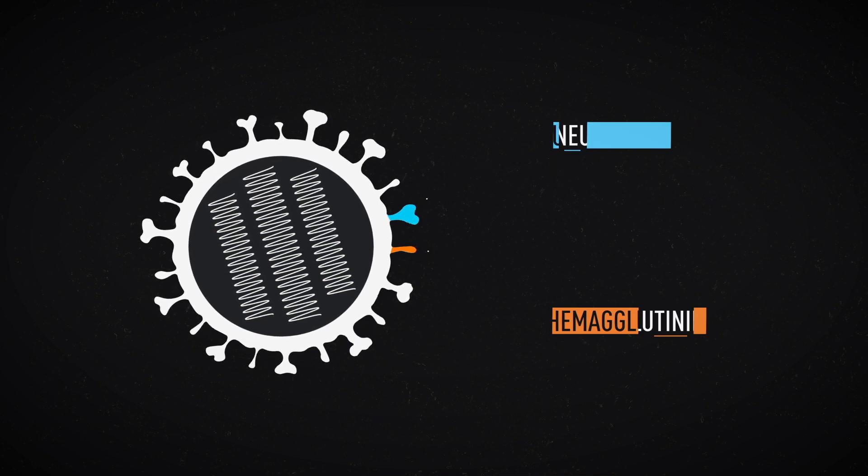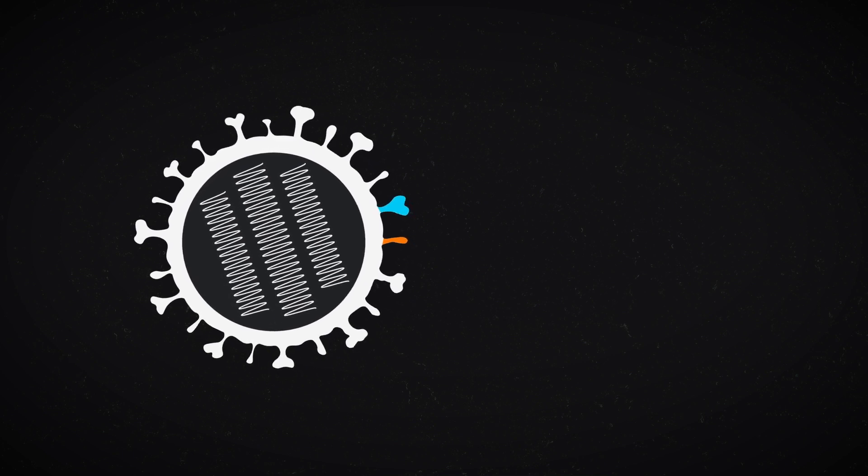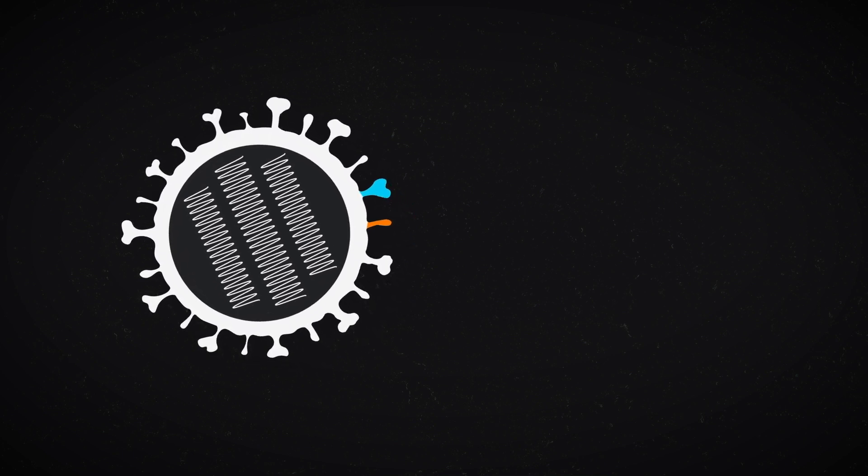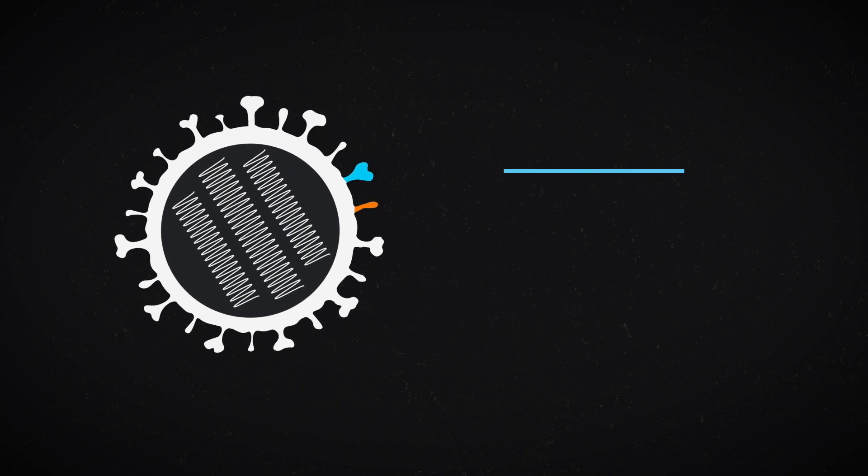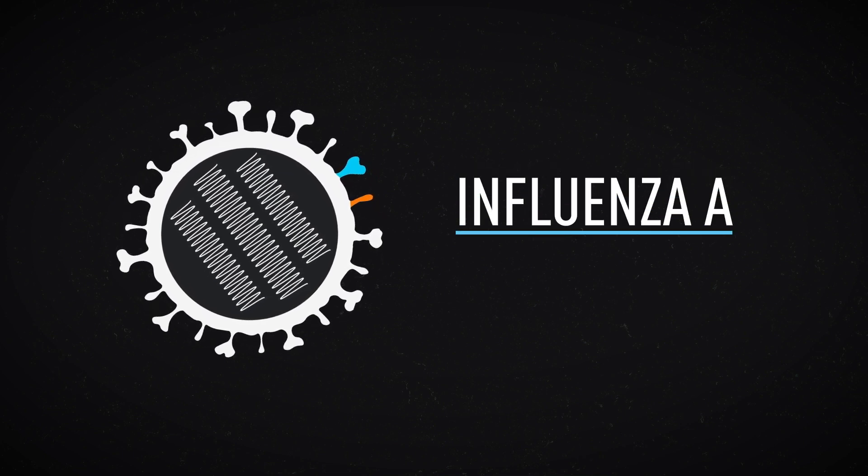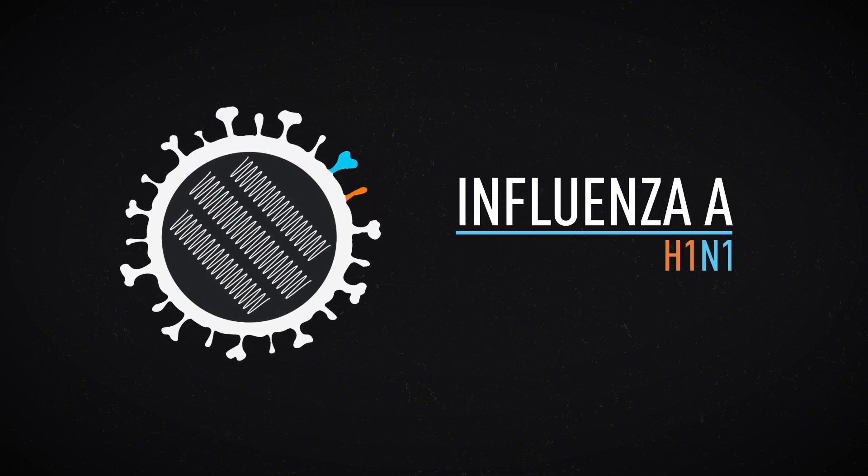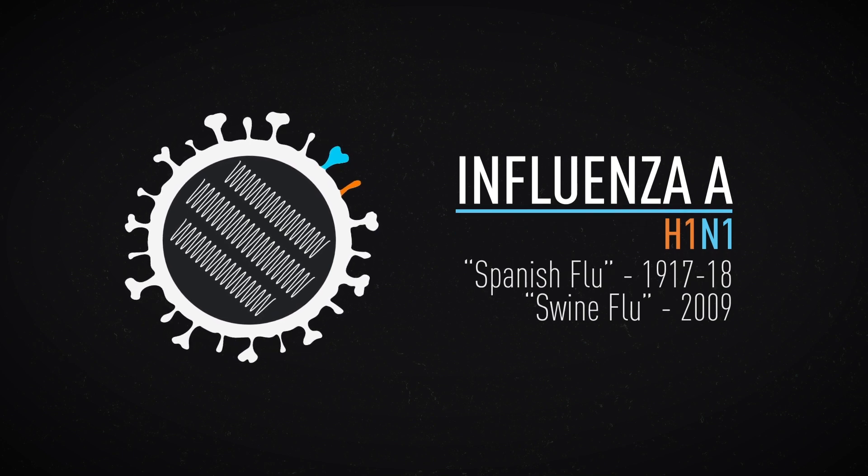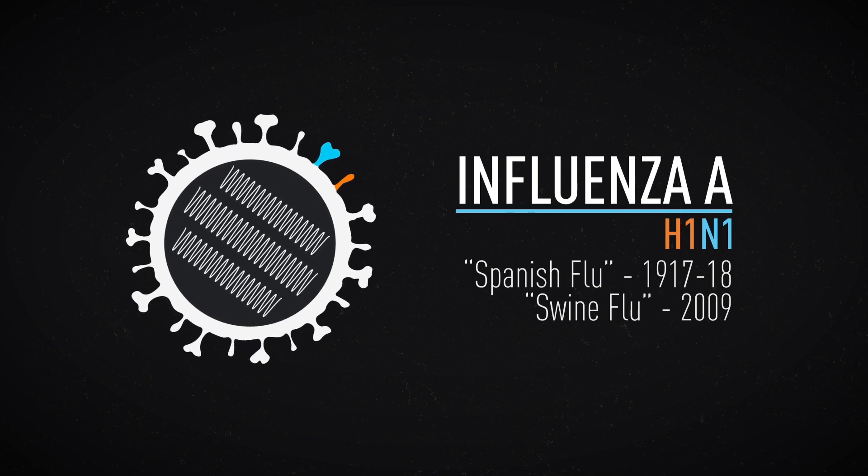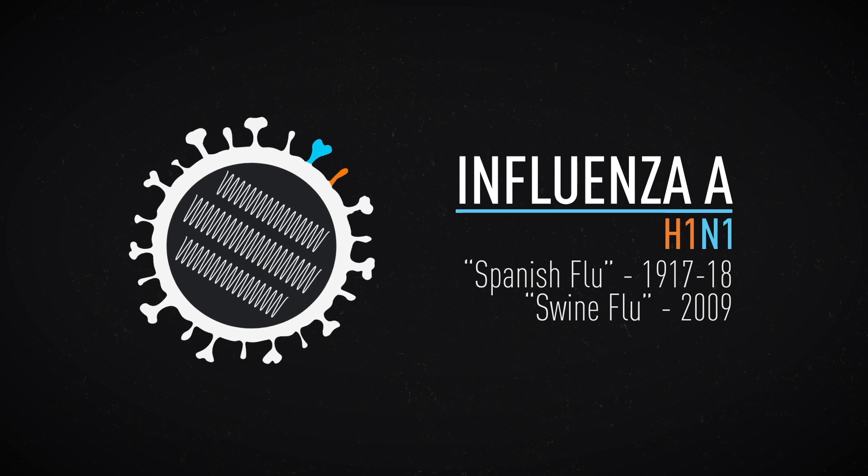These variants are used to identify different influenza types. For example, the 1917-18 flu was influenza A, H1N1. This is the same virus, albeit a new strain, that was also responsible for the so-called swine flu pandemic of 2009.